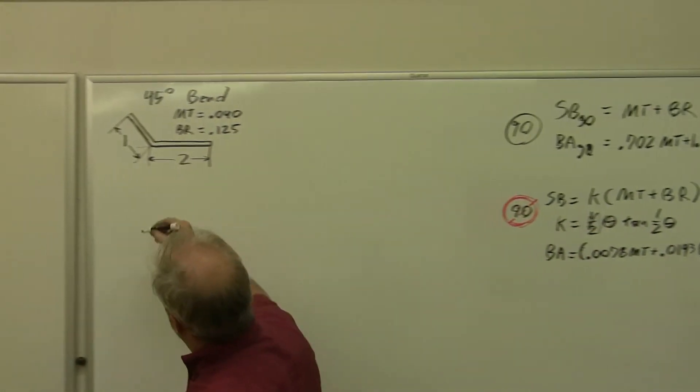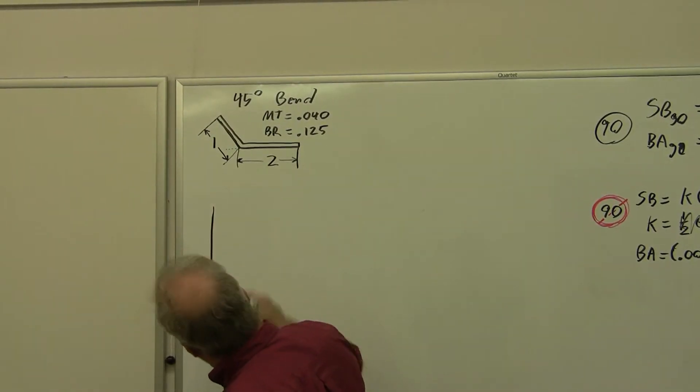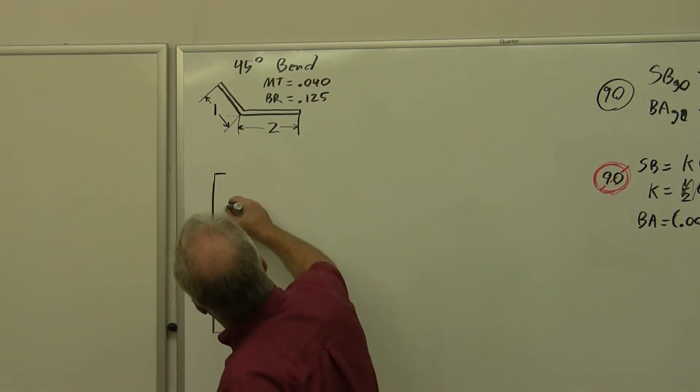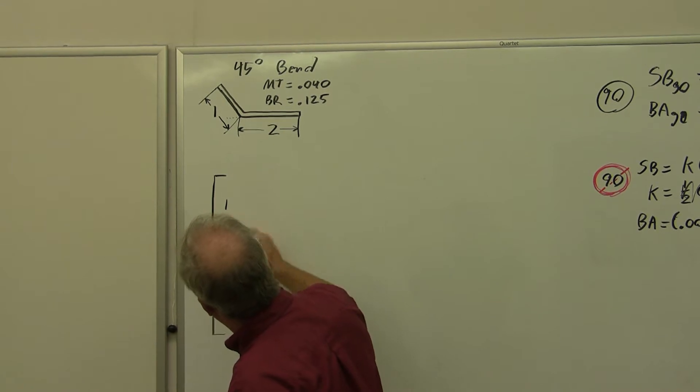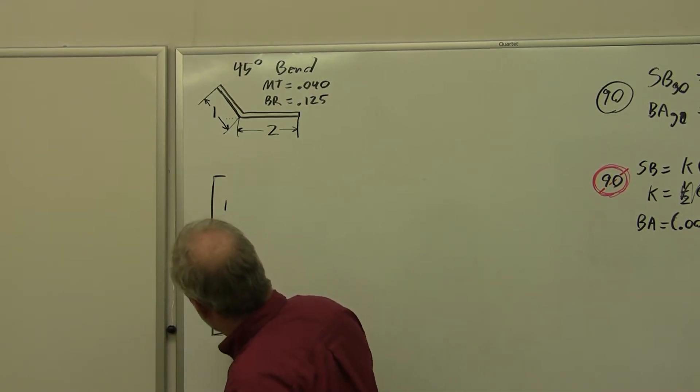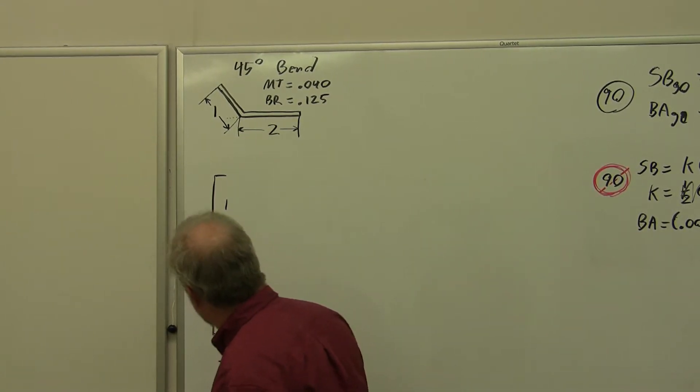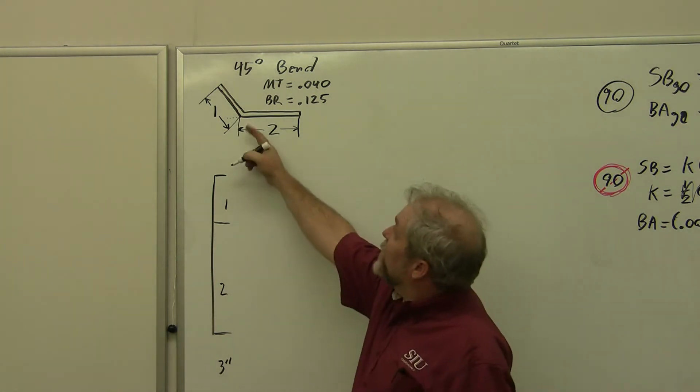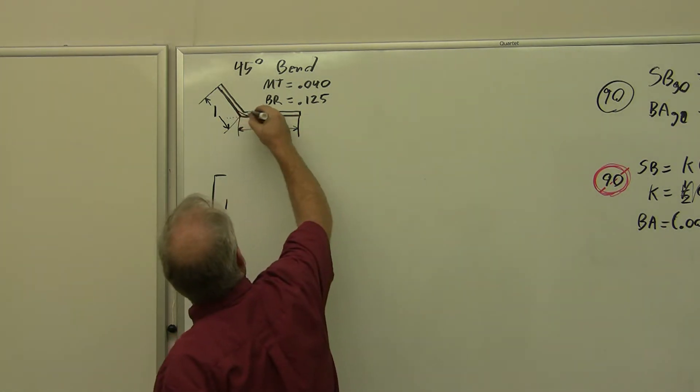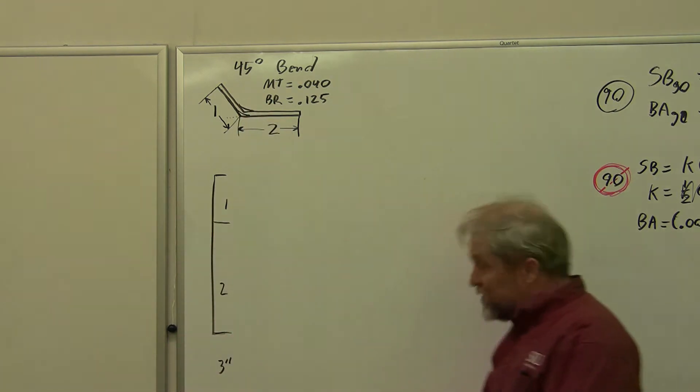Once again, we're going to start with what our flat layout would look like. It would just simply be a one inch leg and a two inch leg, giving us a total of three inches. That's if we didn't have to worry about the fact that we're going to have to round this corner.